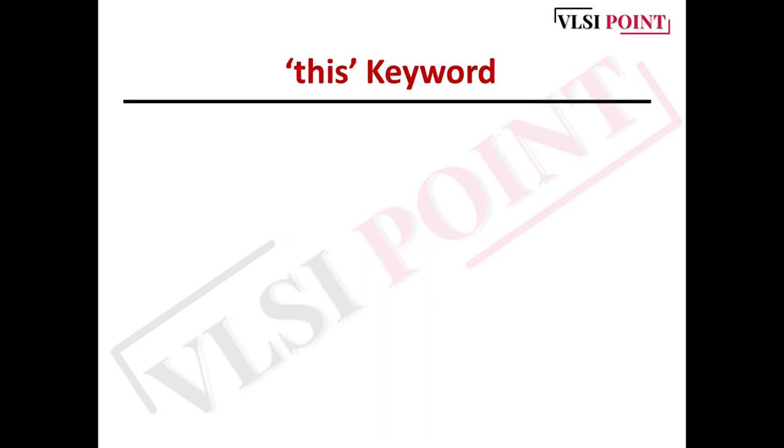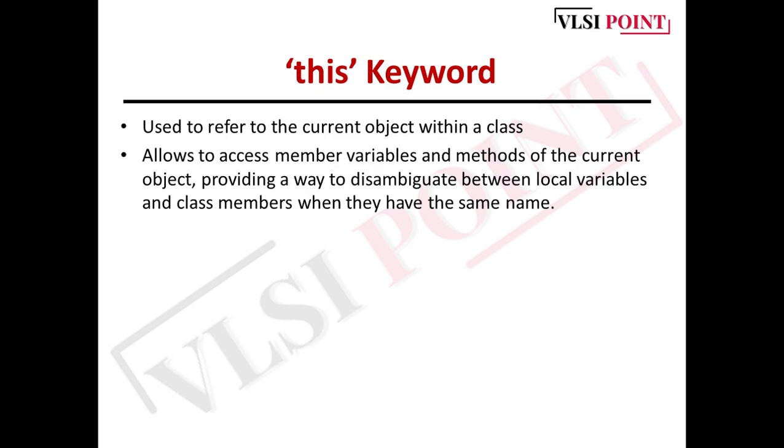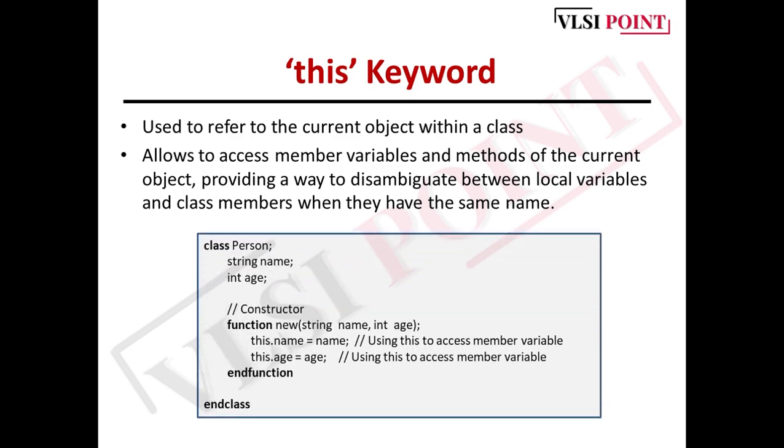Next is the 'this' keyword. By using 'this', you can explicitly refer to the member variables and methods of the current object, even if they have the same name as local variables or parameters. This helps clarify the code and avoid ambiguity.